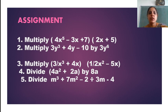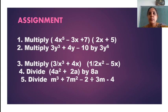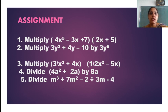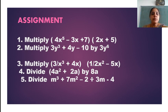Now let's consider the assignment questions on multiplication and division of algebraic expressions. First: multiply (4x⁵ − 3x + 7) by (2x + 5). Second: multiply (3y³ + 4y − 10) by 3y⁶. Third: multiply (3y/x³ + 4x) by (1/2x² − 5x). Fourth: divide (4a² + 2a) by 8a. Fifth: divide (m³ + 7m² − 2) by (3m − 4). Thank you very much, dear students.